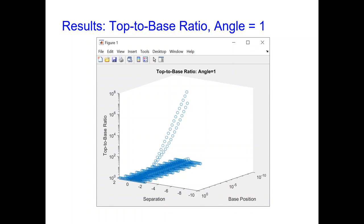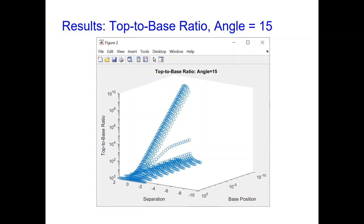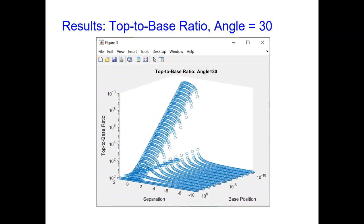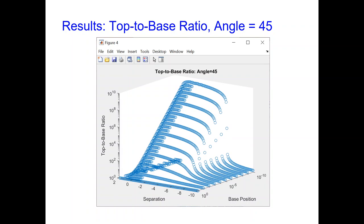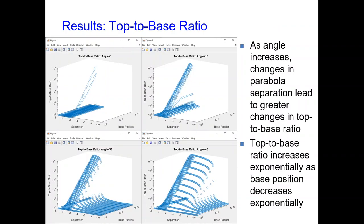This next set of graphs shows the top-to-base ratio, where the z axis is logarithmic. This is shown for angles of 1, 15, 30, and 45 degrees. As the angle increases, changes in parabola separation lead to greater changes in top-to-base ratio, similar to light collection. Additionally, as the base position decreases, the top-to-base ratio increases. This makes sense because decreasing the base position moves the base downwards, decreasing its length while the length of the top remains constant. At a base position of 1, corresponding to a flat concentrator, the top-to-base ratio is also a constant 1.